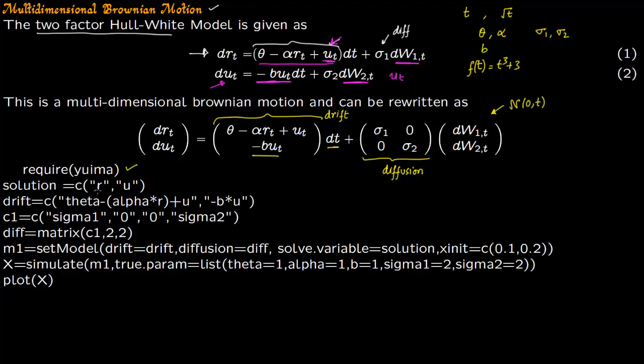You require the yuima package. We are going to solve for r and u. So our drift is this equation: theta minus alpha*r plus u, and the second row is minus b*u. And that is what we have. Theta minus alpha times r plus u, that is this term, comes right here. And then minus b times u comes here.